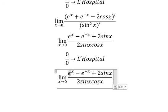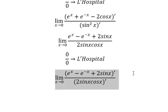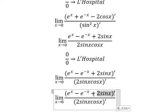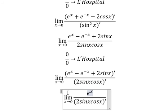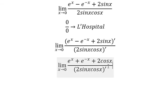So we do first derivative on numerator and denominator again. You will get e to the power of x plus e to the power of negative x, and we get 2cos(x).